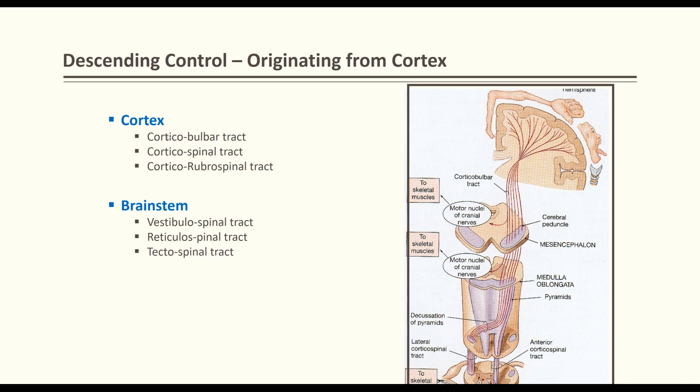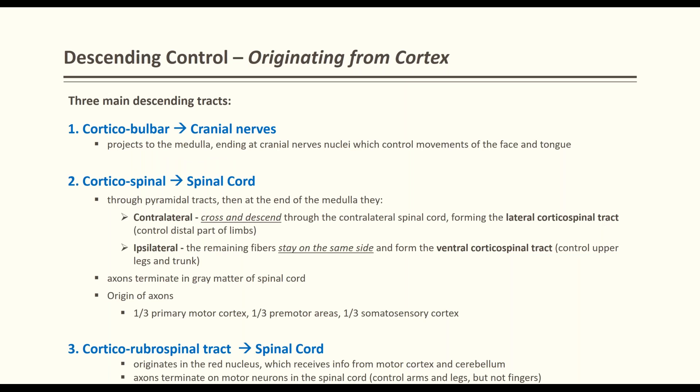The tracts originating from the cortex are: corticobulbar, corticospinal, and corticorubrospinal. Tracts originating from the brainstem include the vestibulospinal tract, reticulospinal tract, and tectospinal tract. Corticobulbar tracts project to the medulla and terminate at cranial nerve nuclei, supplying muscles of the face and tongue. The corticospinal tract — which most are familiar with — is the pyramidal tract; its axons terminate in the gray matter of the spinal cord, synapsing on lower motor neurons.